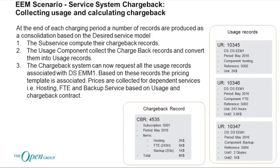The chargeback record compiled for the May period is: hosting 2k dollars; two FTEs at 5k dollars because the contract says 2.5k per person, even though the actual cost below may differ; and backup at two gigabytes costing 1k dollars — for a total of 8k dollars. The reason we know what to collect is because we have a service model that tells us the employee expense management service is delivered by software running on hosting, backup, and FTEs — the model tells us what to collect and compile the chargeback from.